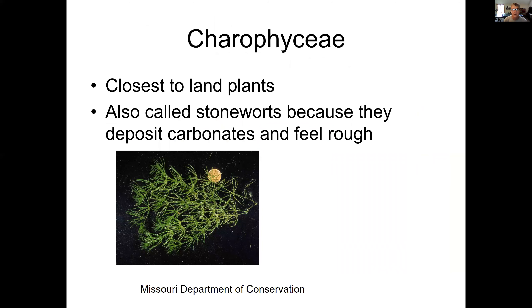Charophyceae are the closest to the land plants. Chara is also called stoneworts because they precipitate calcium carbonate on the outside, giving them a grainy or rocky feeling.